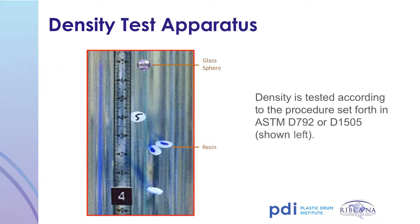How do we measure a resin's density? The density testing apparatus consists of a gradient column comprised of alcohol and water. Annealed resin is placed in the gradient, and the density is determined based on its position relative to a control bead of known density.